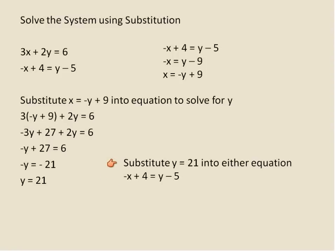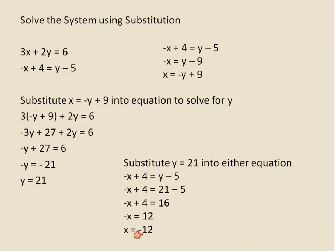You can substitute into either equation — both should give the same answer. I'll pick this one because it looks less complicated. Substituting y equals 21: 21 minus 5 is 16. I subtract 4 from both sides of the equation and then multiply both sides by negative 1. That gets rid of the negative x but makes 12 negative. So x is negative 12. The final solution is x equals negative 12 and y equals positive 21. We could have substituted into the other equation and gotten exactly the same answer.